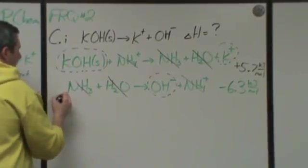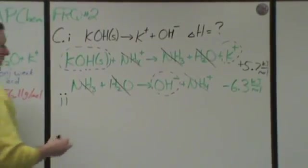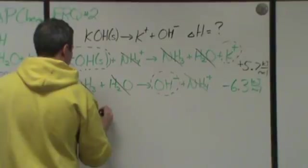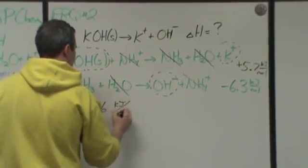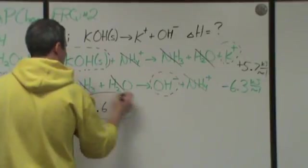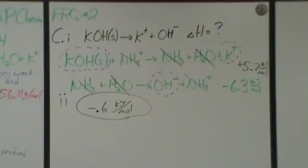In part two it says what's the actual value? The actual delta H is just the sum of the two things. So it would be negative 0.6 kilojoules per mole. And that would be it. When you're done arranging everything, all you have to do is add up whatever the enthalpies are. As long as you've manipulated them correctly, you'll get the right answer.